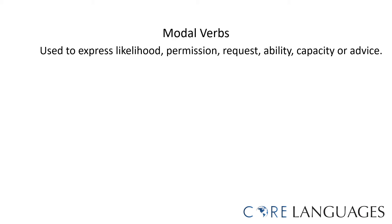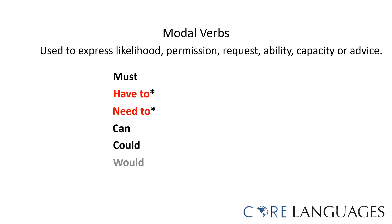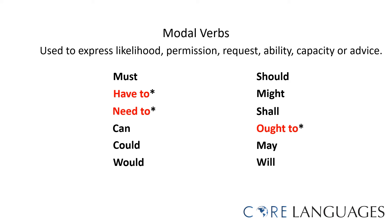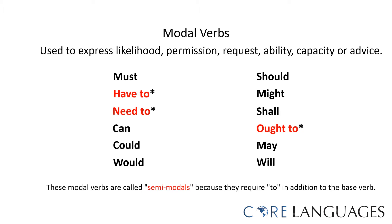Here are examples of modal verbs: must, have to, need to, can, could, would, should, might, shall, ought to, may, and will. Notice that have to, need to, and ought to are marked in red. They are considered semi-modals. They require 'to' in addition to the base verb. Have to and need to also follow a different conjugation pattern than the other modal verbs.